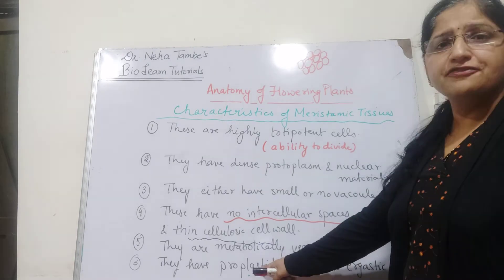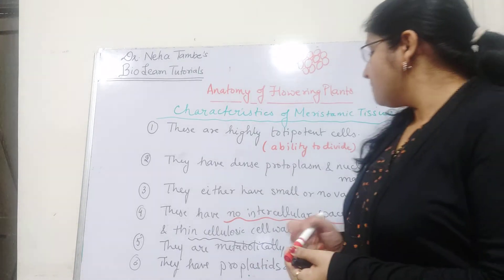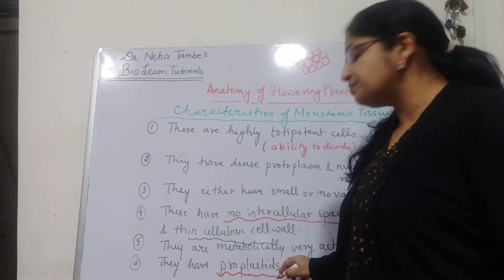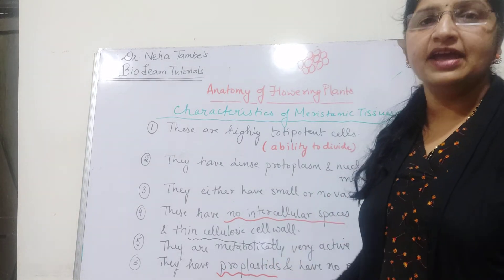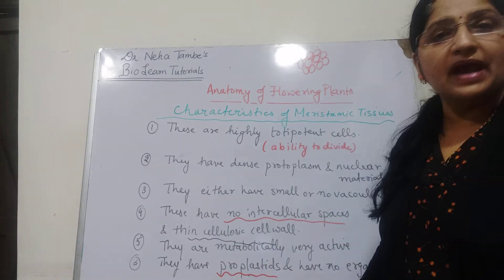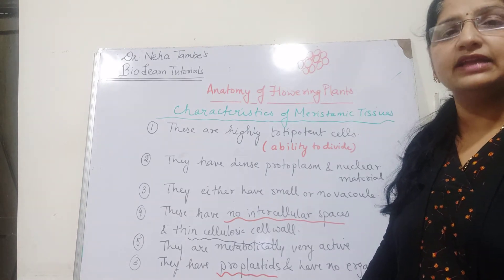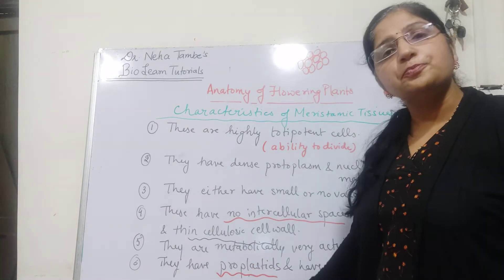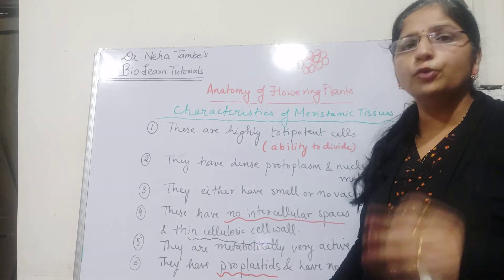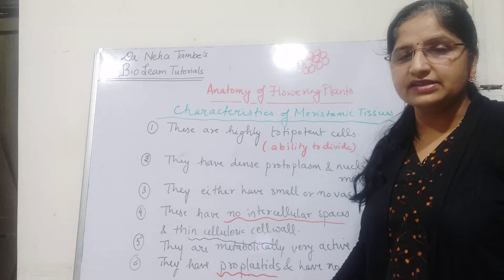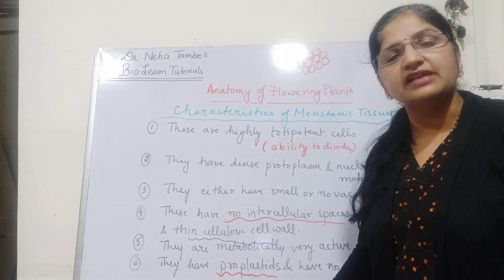They have colorless pro-plastids. Inke paas plastids ki initial developmental stage hain. Proper plastids bhi inke paas, chloroplast bhi inke paas abhi tak nahi bane hain. So colorless pro-plastids hain. Chloroplast inke paas nahi hain. Chloroplast aap jante hain, green color ke plastids hote hain.